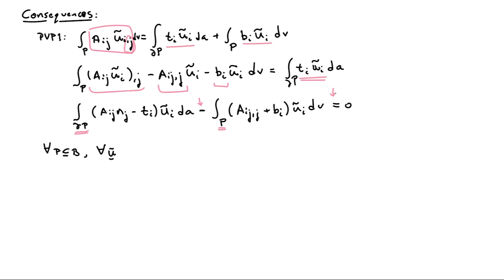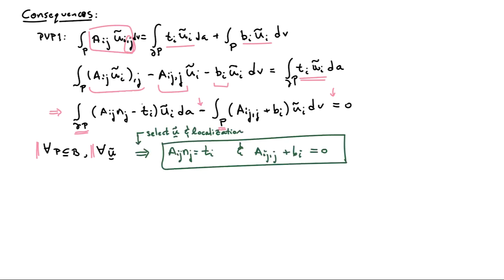This is just a rewriting of the statement that internal virtual power equals external virtual power. Recall that this expression must hold for all parts of the body and for all virtual velocity fields U tilde. By selecting an arbitrary U tilde and using the localization theorem, I can show that Aij Nj equals Ti — so that integrand must be zero — and likewise the divergence of A plus the body force must also equal zero. These two relationships should look familiar.